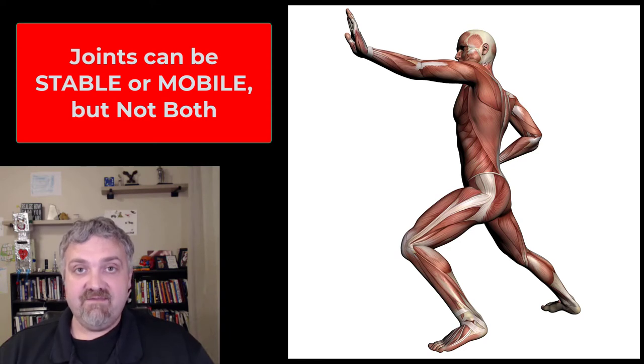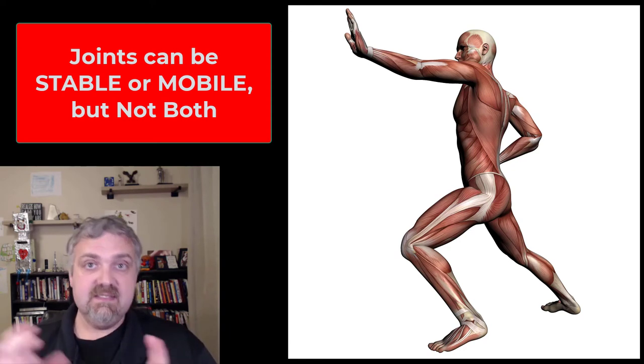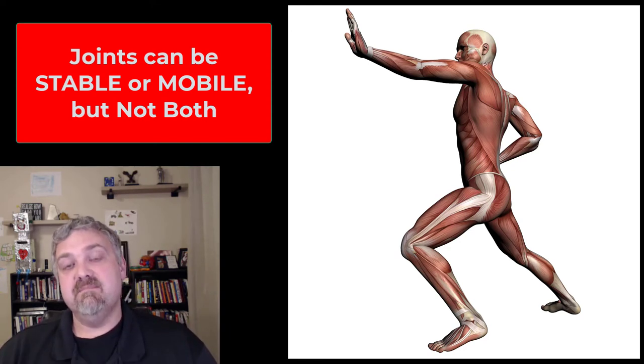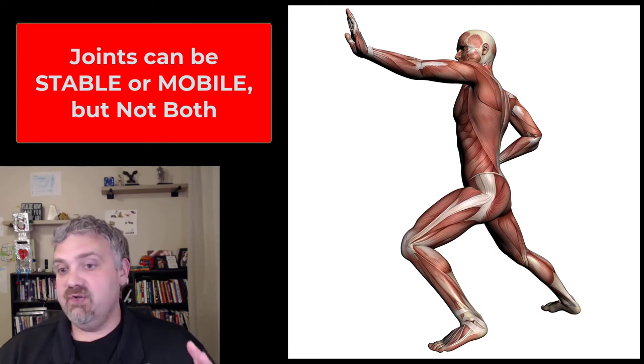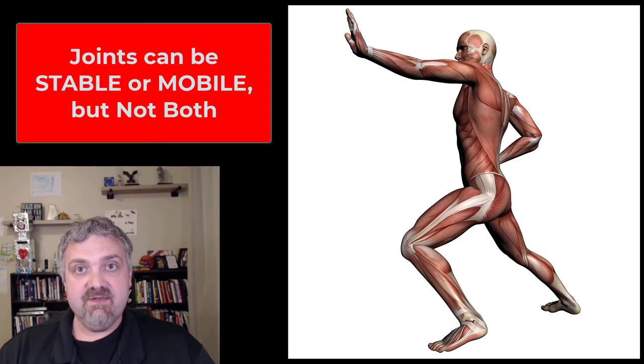So just keep that in mind. Joints have to either sacrifice stability to be mobile or sacrifice mobility to be stable. In this unit, we'll talk about joint movements, how we classify those joints, and what it means to be an immovable joint.